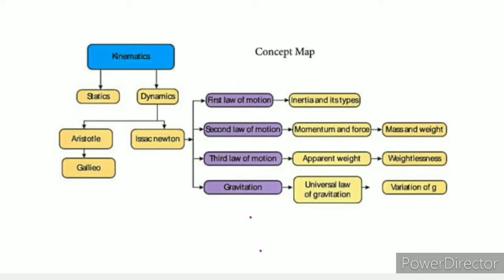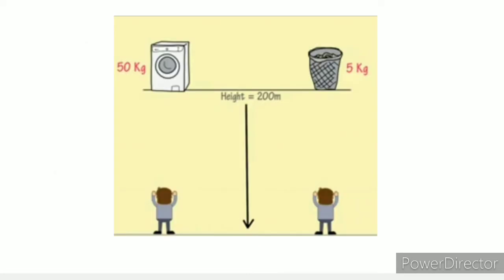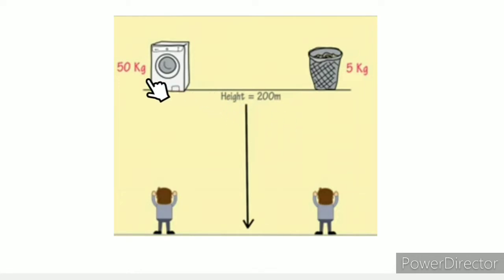Concept map — this is part of the concept map. In the video, we will look at momentum. In the picture of the map, the height shown is 200 meters, with masses of 50 kilograms and 5 kilograms.